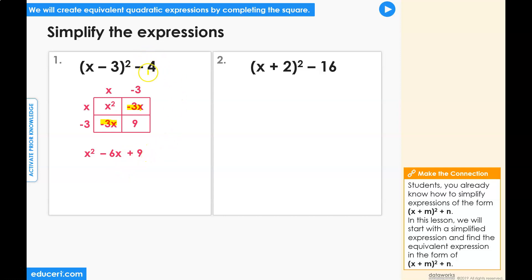And now we can include the minus 4 numeric term from the original expression behind the 9. Combining the numeric terms, we get the simplified expression x squared minus 6x plus 5.